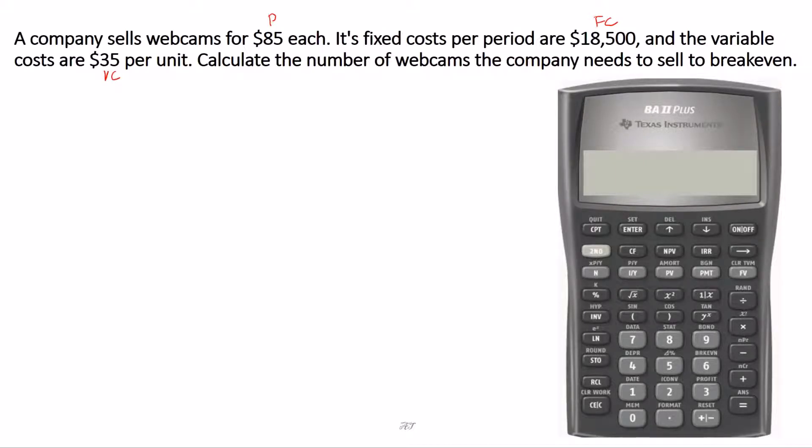We're looking for the number of webcams, or the quantity, the company needs to sell in order to break even. The first step is to go to the break-even worksheet. To access it, press second and then press number six. Break-even worksheet is the secondary function on number six.